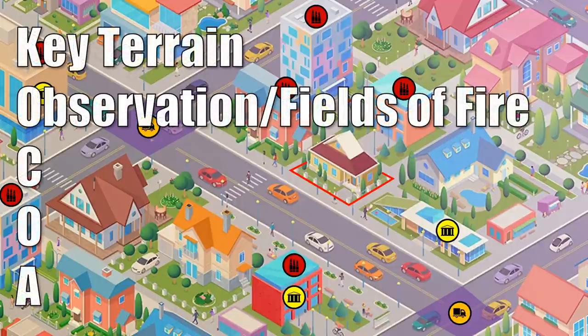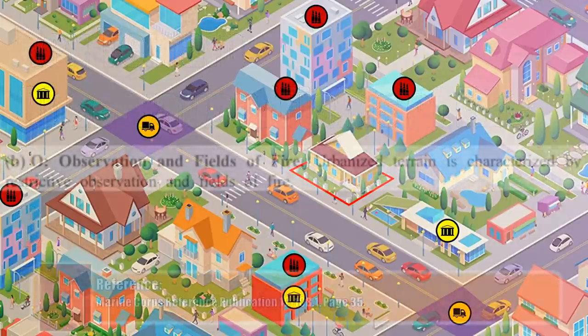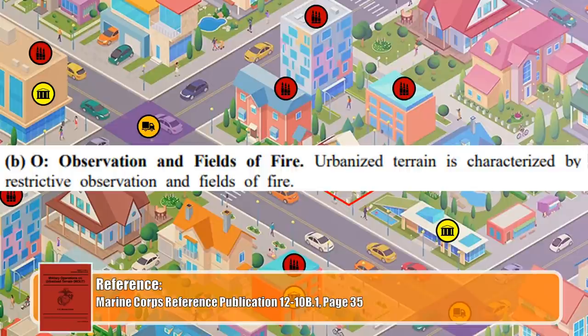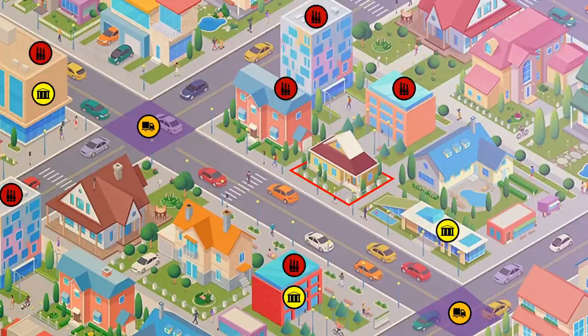Up next is O — observation and fields of fire. As the MOUT handbook so eloquently puts it, urbanized terrain is characterized by restrictive observation and fields of fire. In other words, in the urban landscape, most of the time you're going to have a poor view from your position and there's not much you can do about it. The urban landscape also severely restricts the ranges of most weapon systems. In most doctrine, observation and fields of fire are essentially the same thing. So let's drop some sectors of fire around our house here.